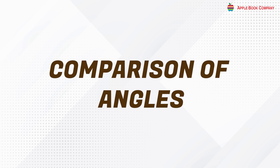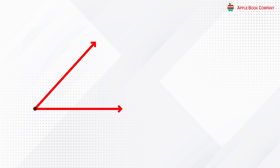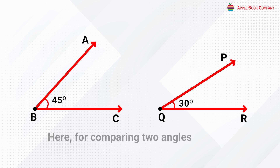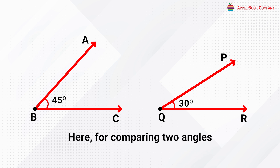Comparison of angles: we can easily compare two angles, angle ABC and angle PQR, by comparing the expansion of the sides of the given angles. For comparing two angles, we follow the following steps.